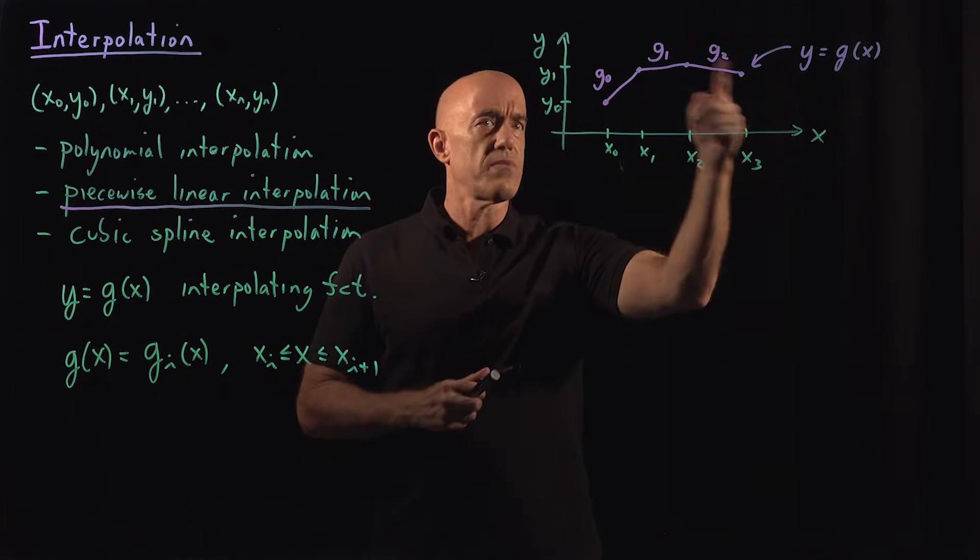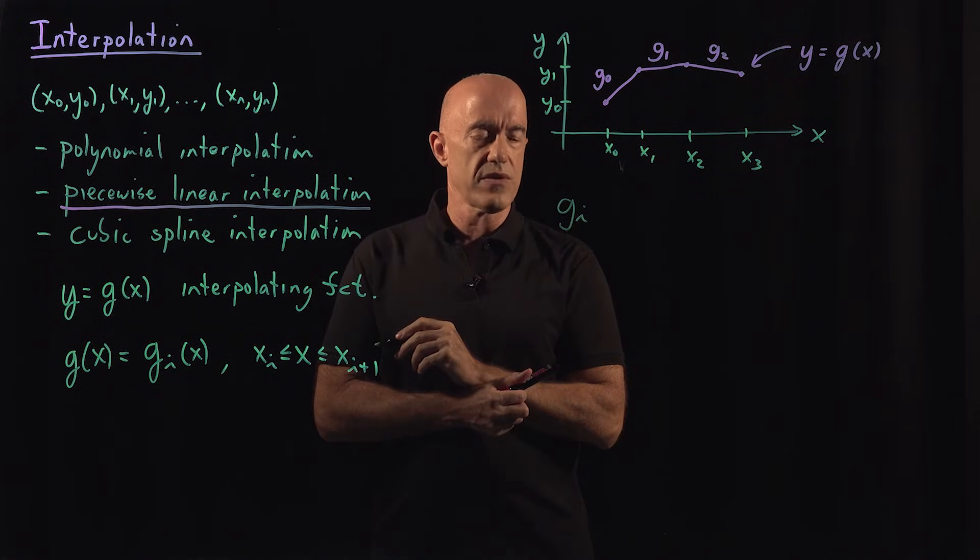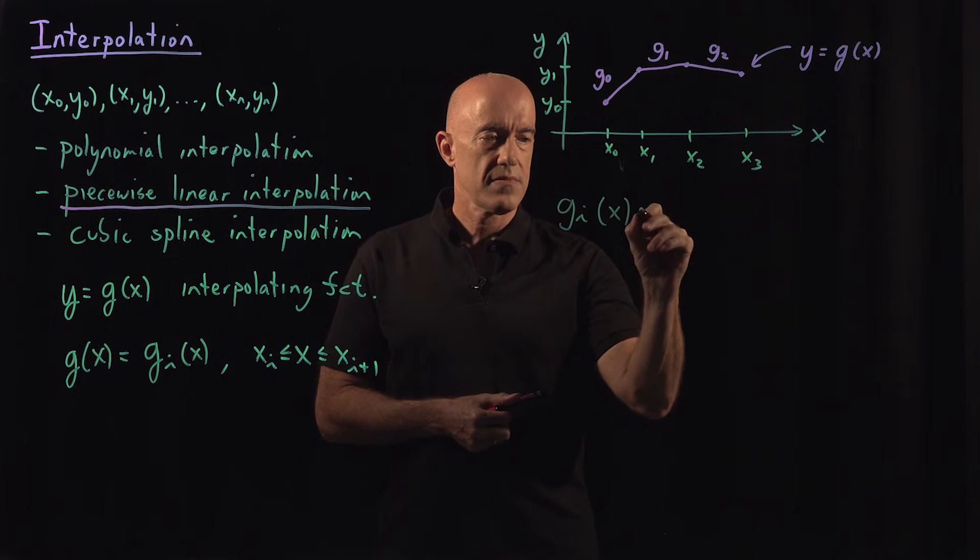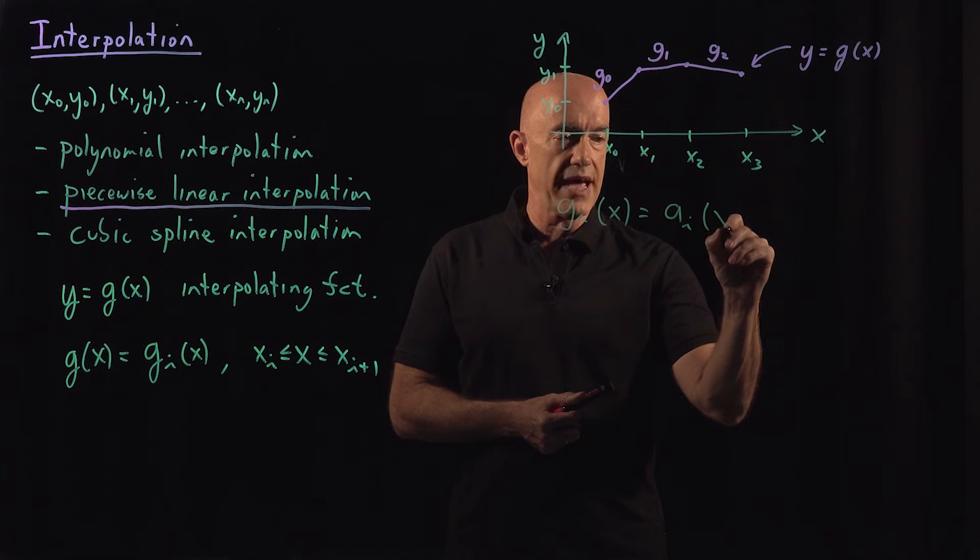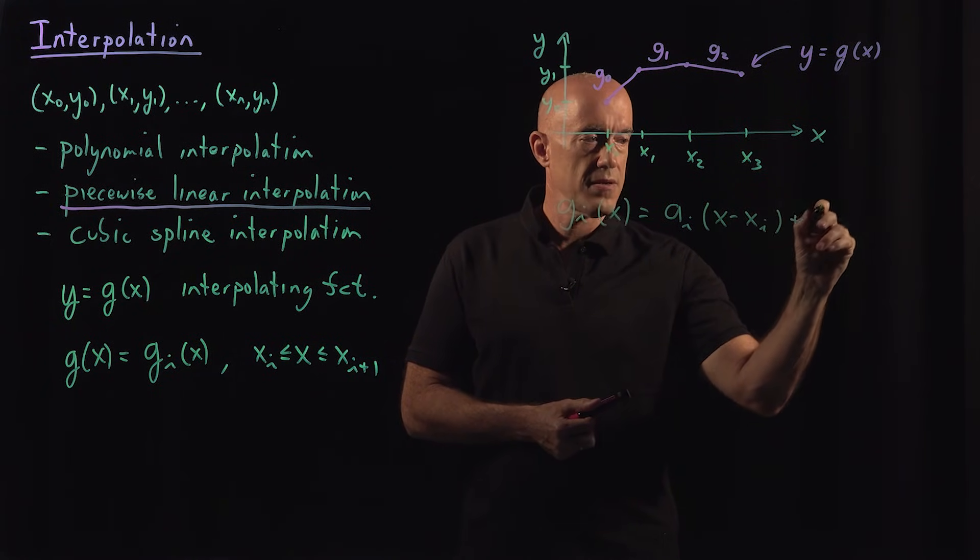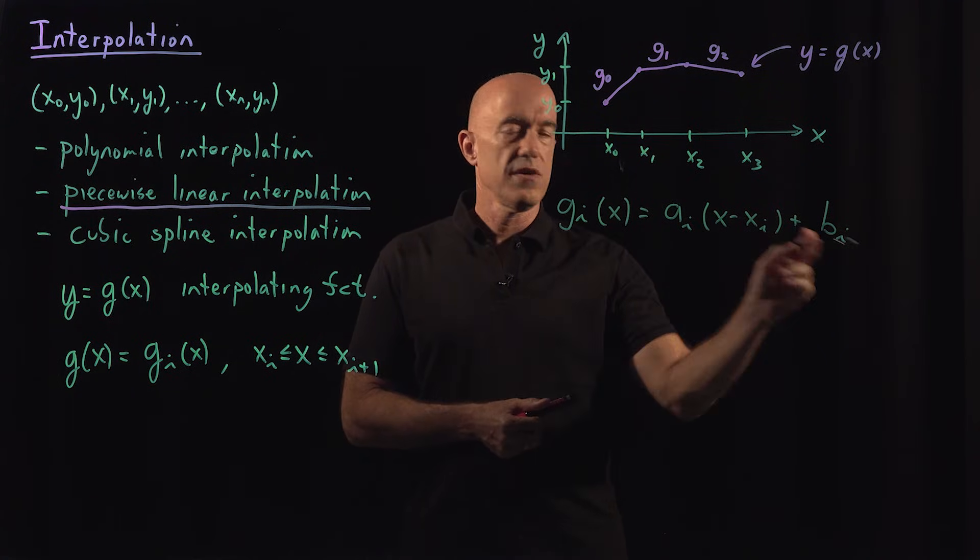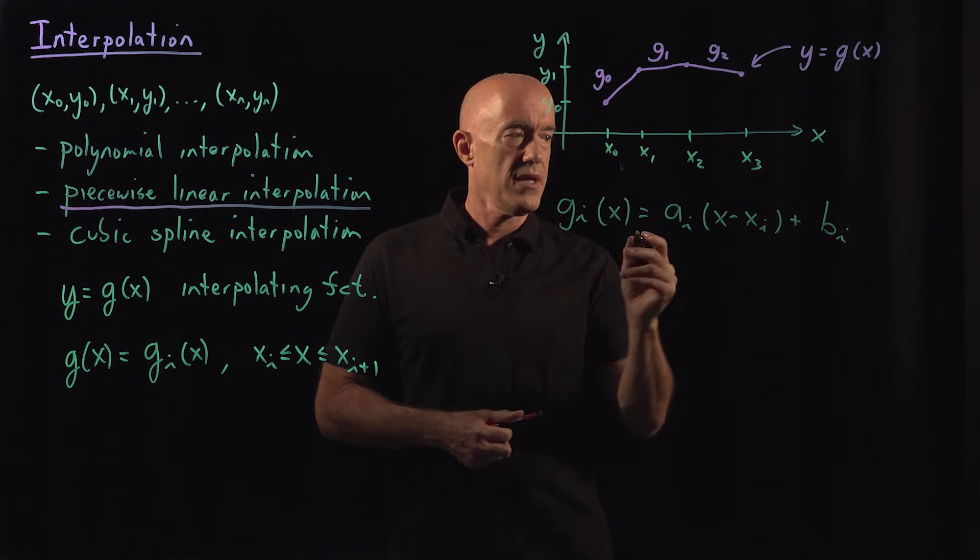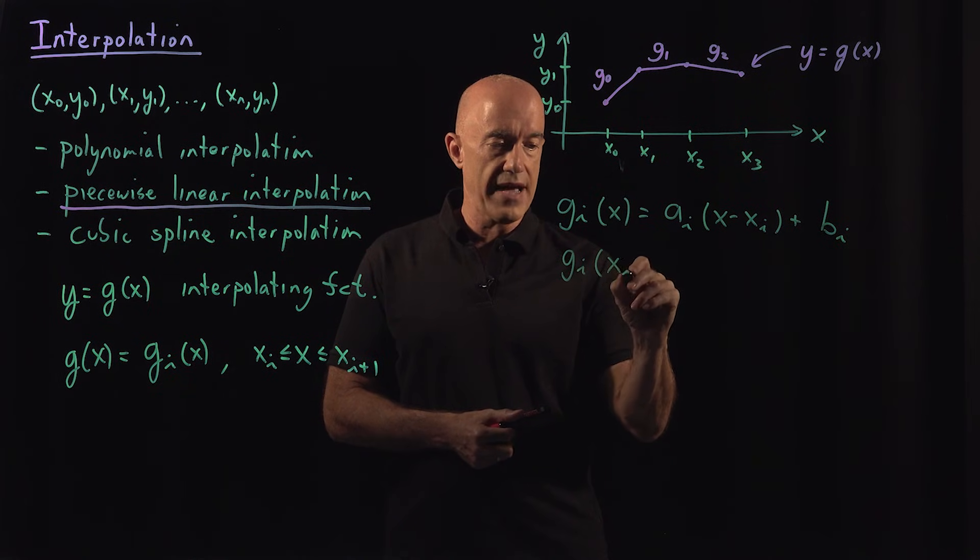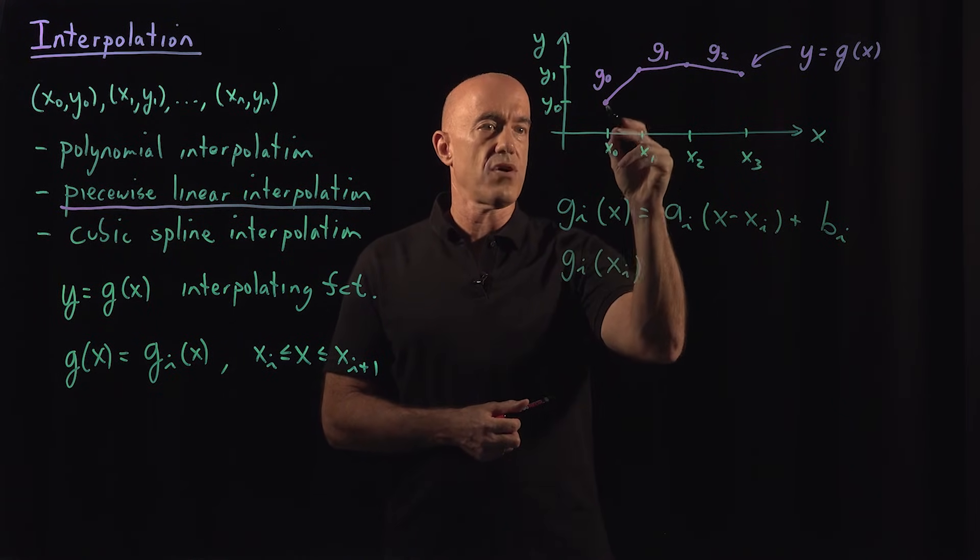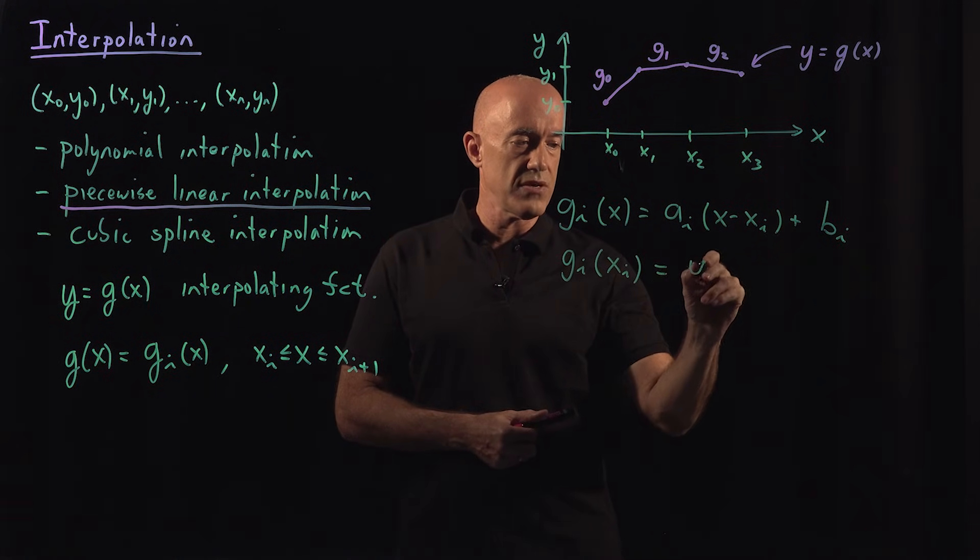So how do we determine these g i functions? Well, we can write g i as a linear function. So we can write g i of x equals a i times x minus x i plus b i. So each of these piecewise linear functions have two free constants that we have to determine. How do we determine those constants? Well, we know that g i at the value of x i, which would be g zero at x naught, g one at x one. We know those values. Those are supposed to be equal to y i.